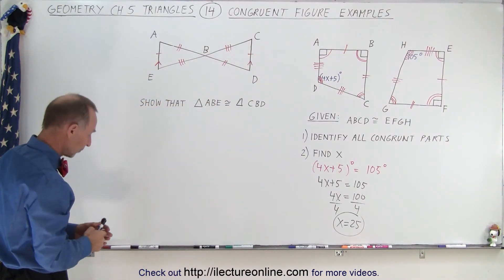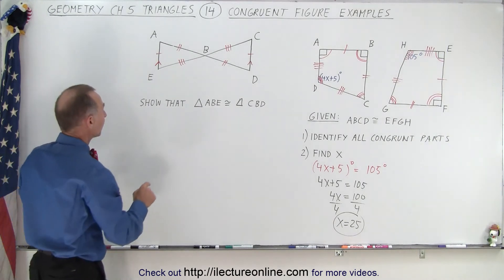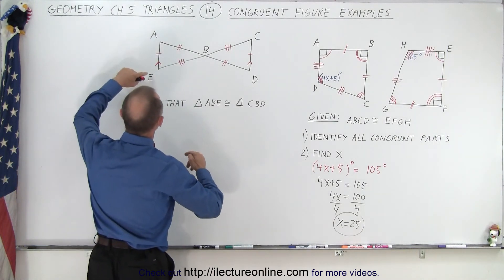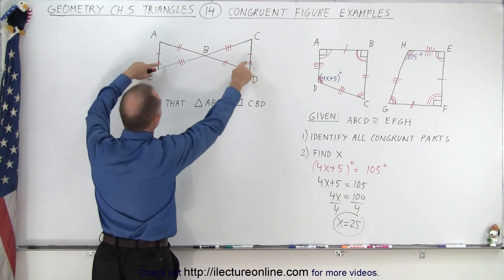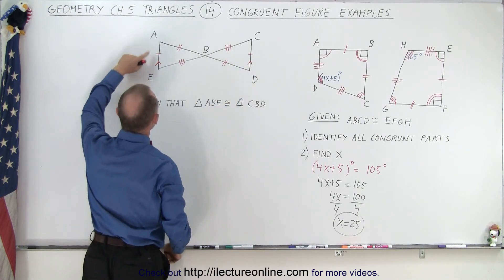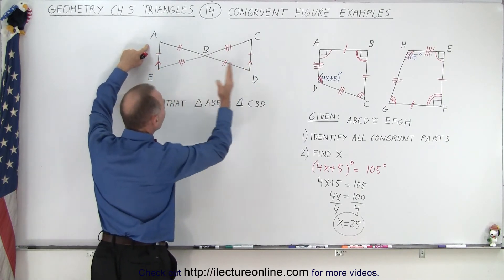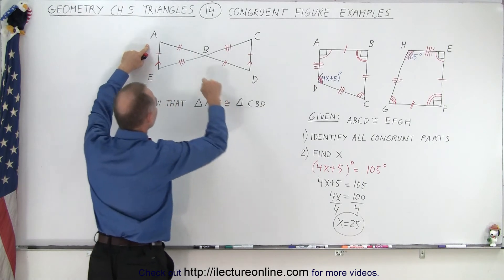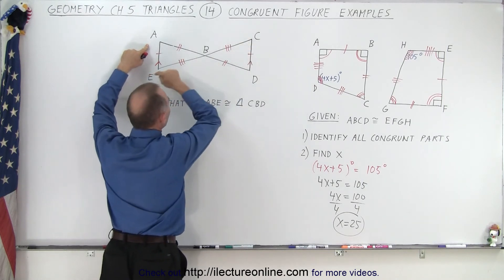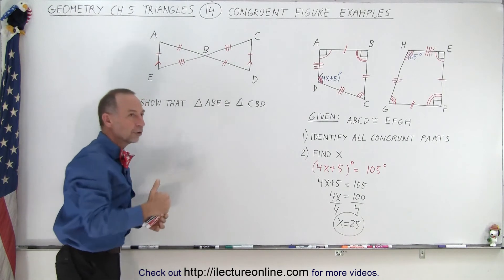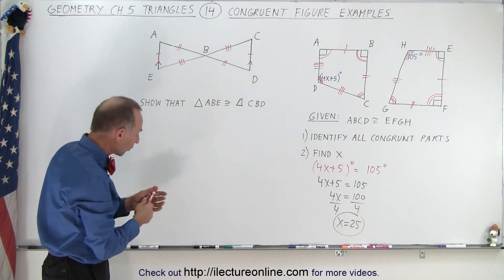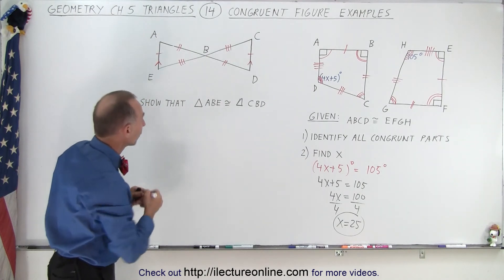But what about the corresponding angles? Well, to give us one more piece of information, we're shown here by the little arrows, that side EA is parallel to side DC. And then here we can call this the transversal, which means that the alternate interior angles must be congruent.